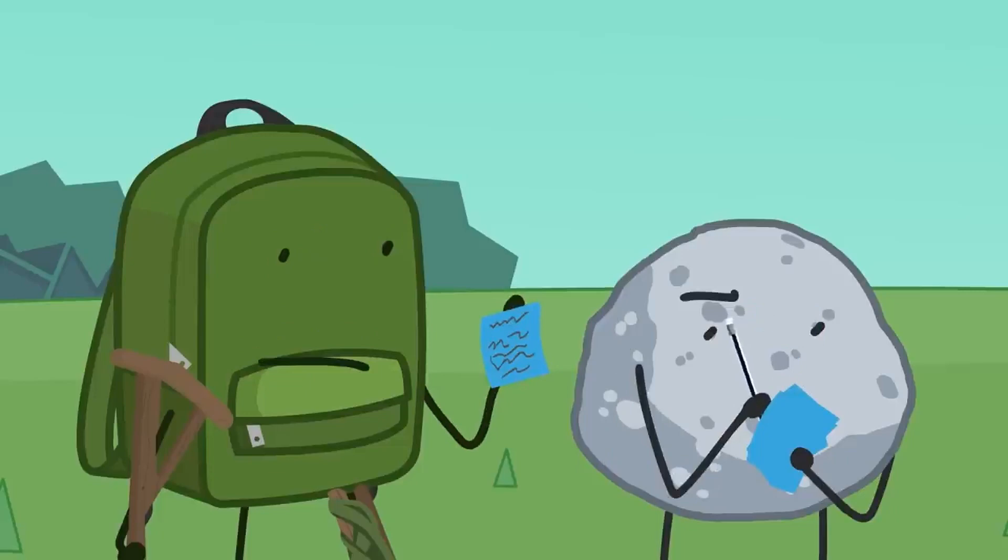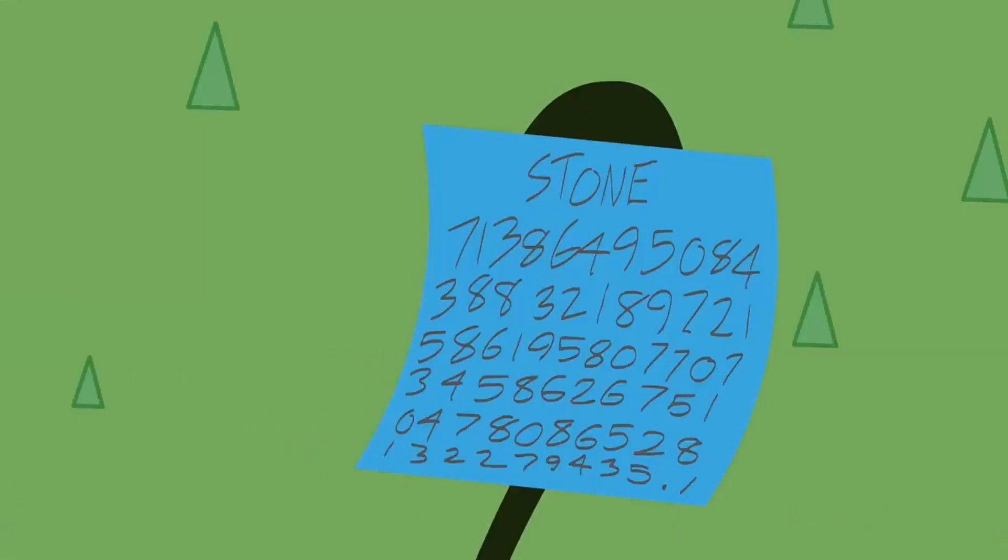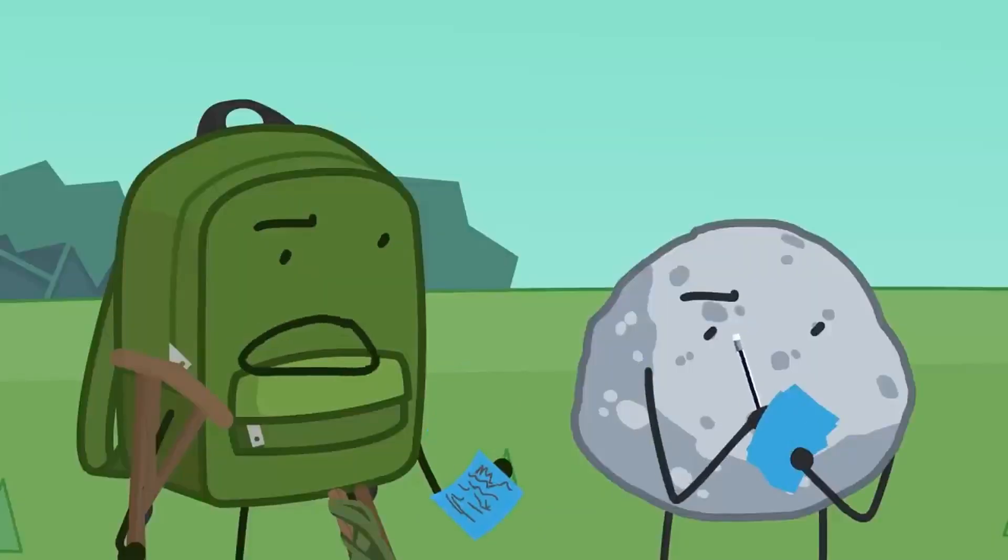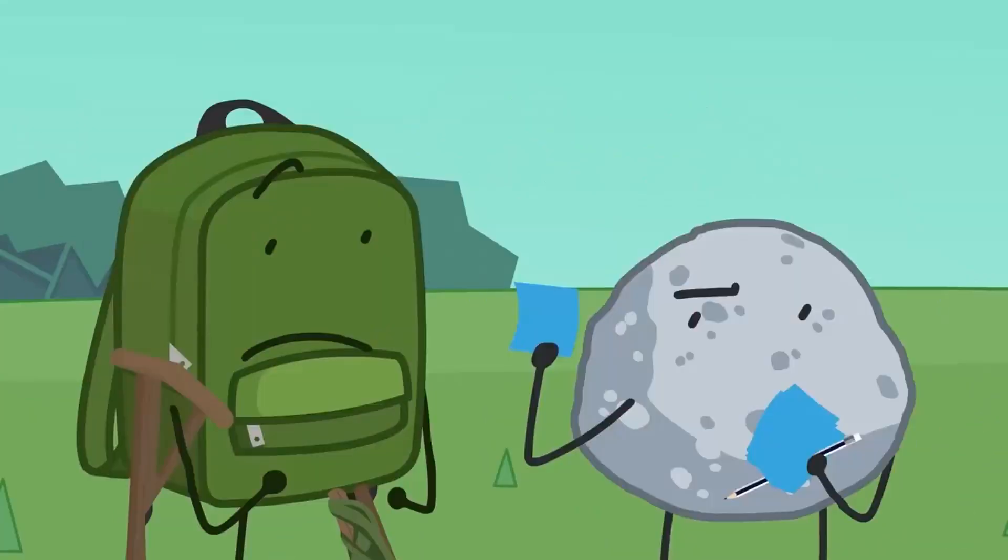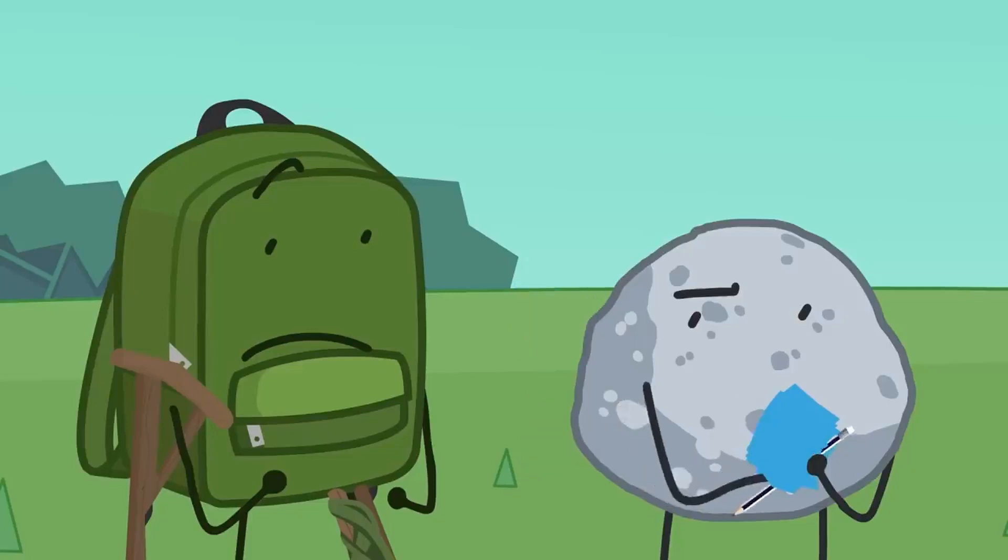But Stoney then gives Backpack what he was drawing, which wasn't drawings at all, but rather notes. Backpack tries to confront him about this, but Stoney takes back the note and continues writing.